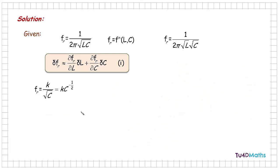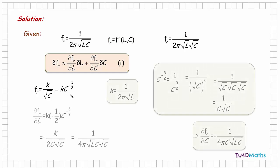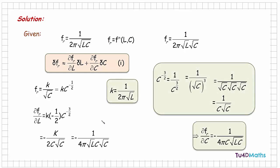Using the same approach, we calculate the partial derivative ∂f/∂C — the rate of change of frequency with respect to the capacitance. Applying the same logic used for ∂f/∂L, the rate of change of frequency with respect to capacitance is equal to −1 over 4πC√(LC).